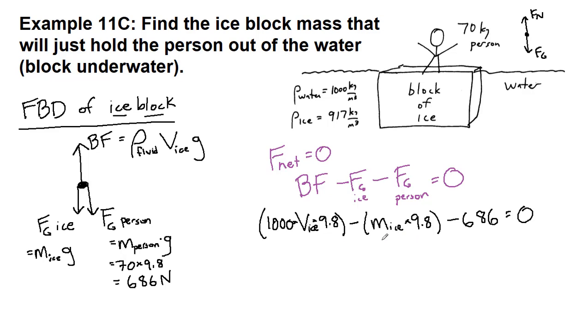It looks like we have two unknowns, however those two unknowns are related to each other through the fact that they are both relative to the ice block and the density of ice is a known quantity. The ice density is 917, so 917 times that unknown volume of the ice equals the mass of the ice. So we have 9800 times the volume of the ice minus 917 times that volume of ice times 9.8, and I'm going to add 686 to both sides.